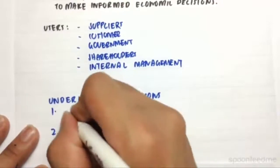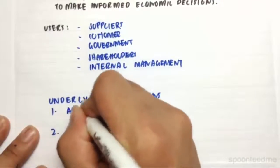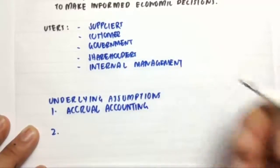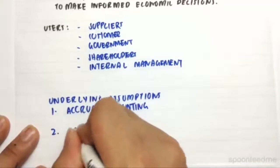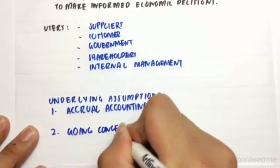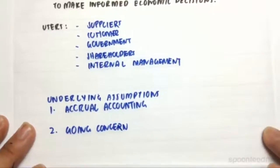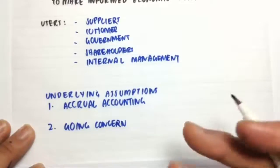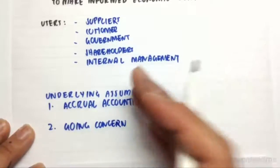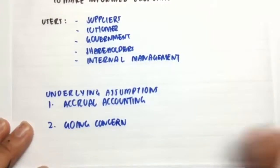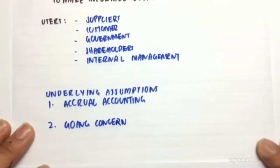Number 1 is going to be accrual accounting. So therefore we're going to record the substance of the transaction. Number 2 is going to be going concern. And that means that all the values portrayed inside our financial statements are going to be related to the company's ability to stay relevant or stay afloat in the future. However, if they are going bankrupt, the values inside that financial statement need to be liquidation values.